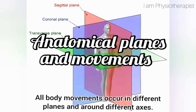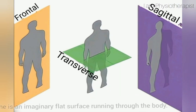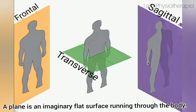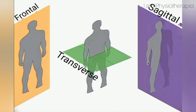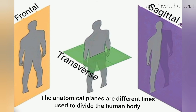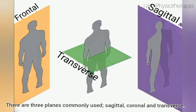All body movements occur in different planes and around different axes. A plane is an imaginary flat surface running through the body. The anatomical planes are different lines used to divide the human body. There are three planes commonly used: sagittal, coronal, and transverse.